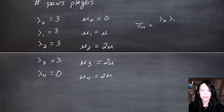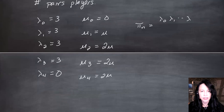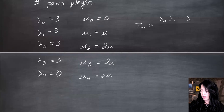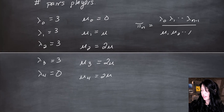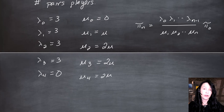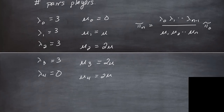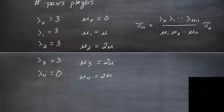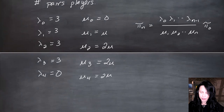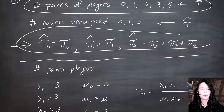You can use the birth and death process stationary distribution formula to write out pi-1, pi-2, pi-3, and pi-4. There is also pi-0, and to find it you make all probabilities sum to one. Once you find those, go back and relate them to courts occupied.